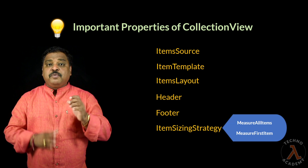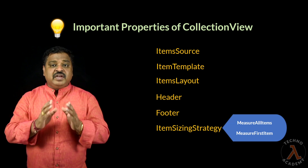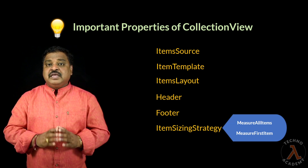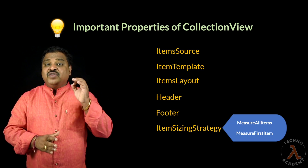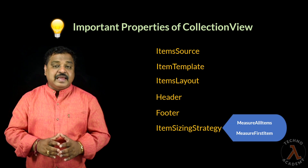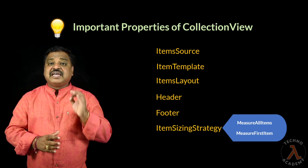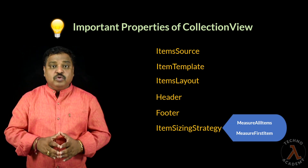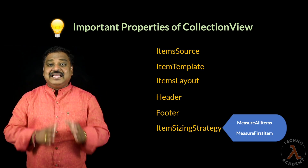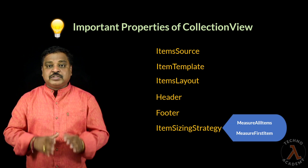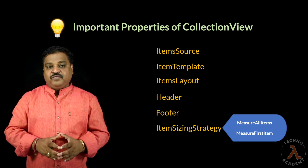If we set MeasureFirstItem as the value for ItemSizingStrategy, then only the first item is measured and all subsequent items will be given the same size as that of the first item. One important point: there is no property like HasUnevenRows for setting item size for rows in Collection View.